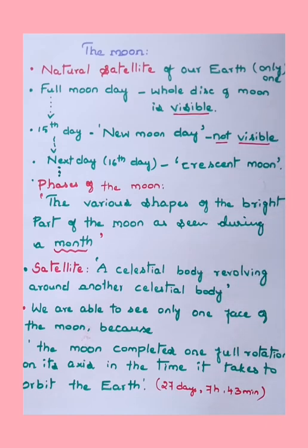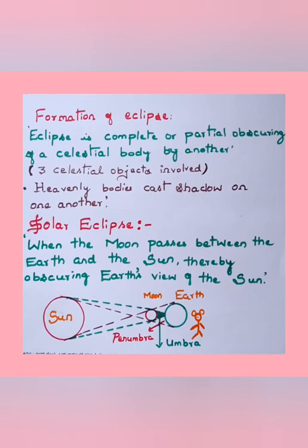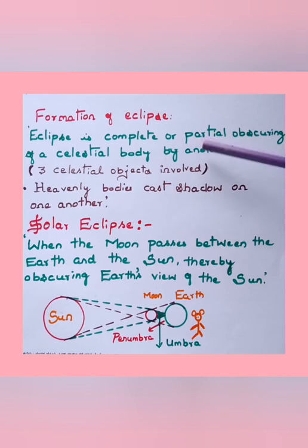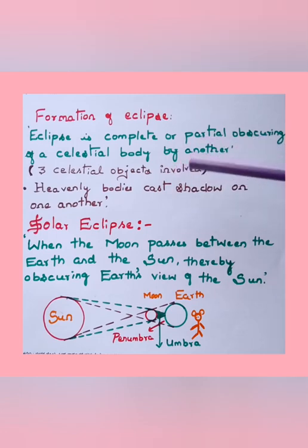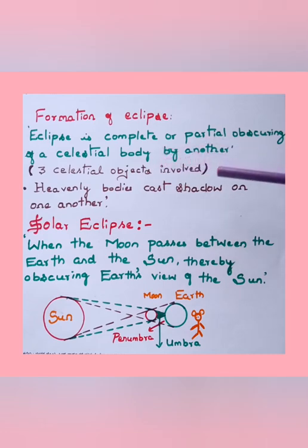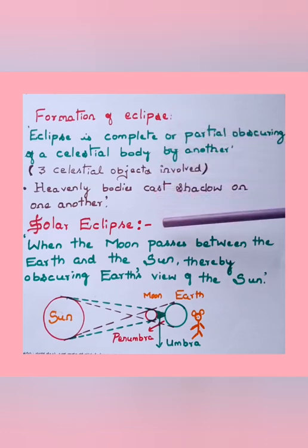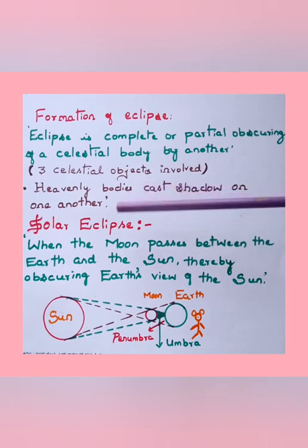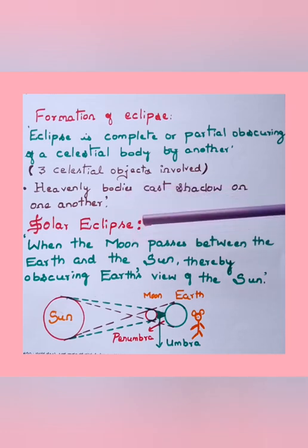An eclipse is the complete or partial obscuring of a celestial body by another. In general, three celestial bodies are involved. Heavenly bodies casting shadow on one another is called an eclipse. There are two types of eclipse we observe from the earth: solar eclipse and lunar eclipse.